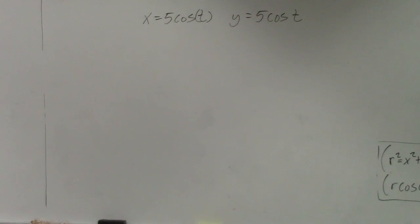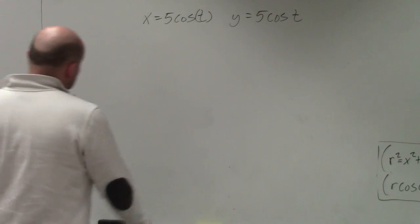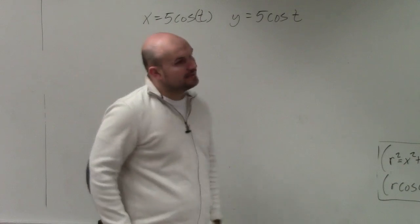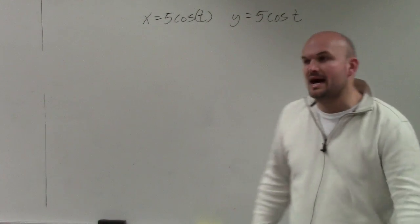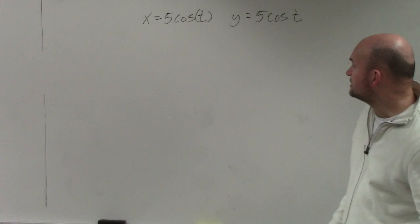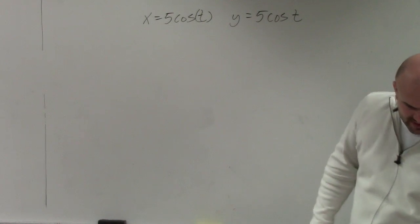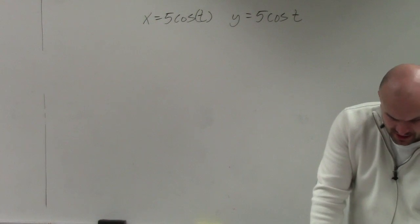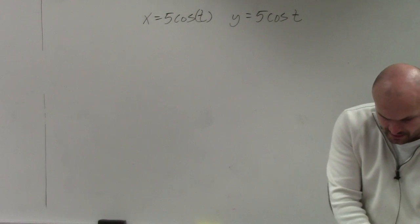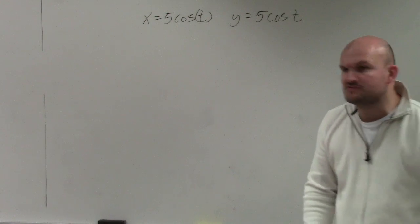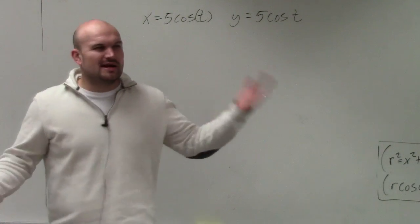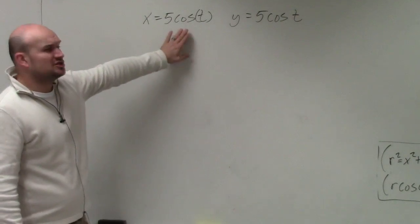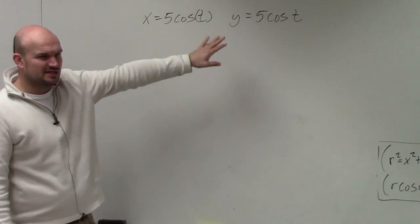Eliminating the parameter in this case is a little bit different. Because now, if you guys look at this, to solve for t we'd have to use the inverse function to solve for cosine t. So we're not really going to want to use that to solve for t and then plug it into the other equation.